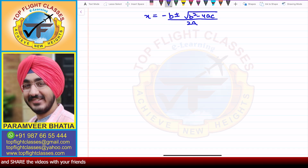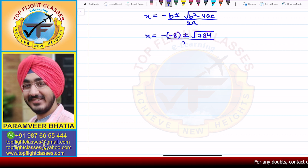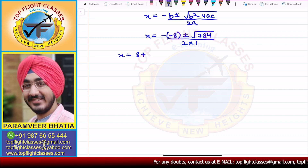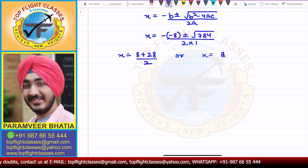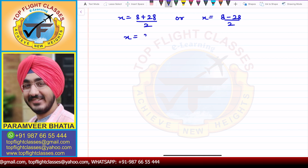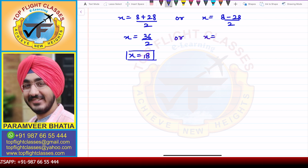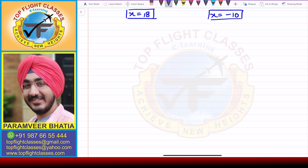The quadratic formula is x = (−b ± √(b²−4ac)) / 2a. Here, x = (8 ± √784) / 2, which is (8 ± 28) / 2. So x = (8 + 28)/2 = 36/2 = 18, or x = (8 − 28)/2 = −20/2 = −10.